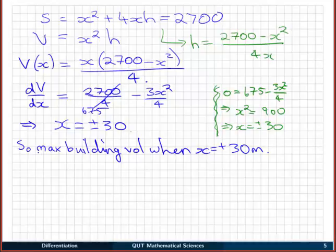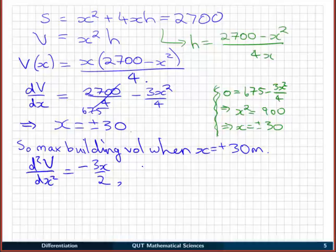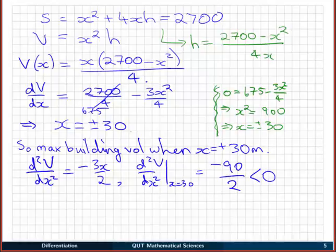We could just leave it there, but what we should really do is check whether this is going to give us a maximum, and then we should also check the endpoints of our domain. Now, I'm going to check it with the second derivative test. So the second derivative of V with respect to x will give me minus 6x over 4, or minus 3x on 2. When x is equal to 30 meters, d²V/dx² is going to be equal to minus 90 on 2, and I can see straight away that's less than zero. Therefore, I can conclude that a side length of x equals 30 will give a maximum for the building. Second derivative less than zero implies a maximum.